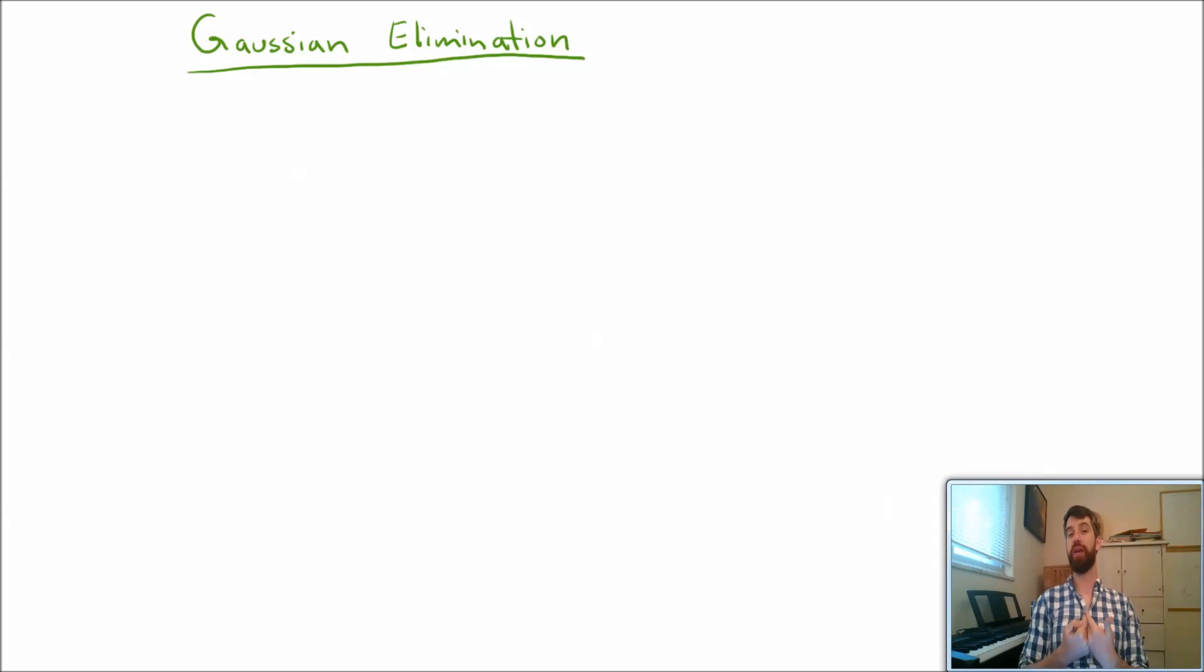However, that doesn't still give us a methodology, because we don't know what order we're supposed to apply these elementary row operations in. We don't even know what the outcome we're hoping for is supposed to be. So what we're going to try to do in this video is to establish what our goal is going to be, what we want the elementary row operations to actually accomplish, and we'll see an example how we're going to make that work.